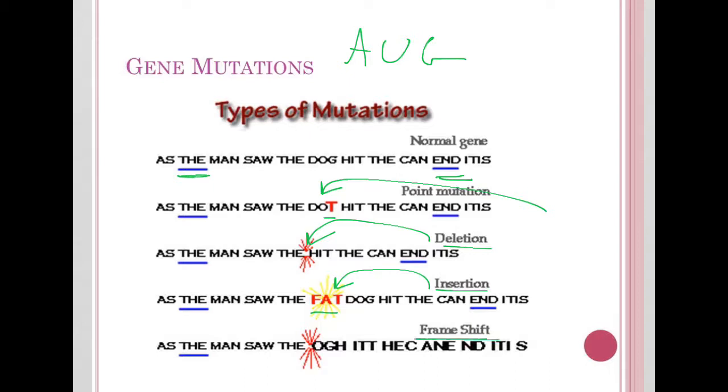But here's your frameshift mutation, where we deleted the D of dog. So now we have the man saw the O-G-H-I-T-T-E-H-E-C-A-N-E, etc. Notice that it's changed all of these amino acids, and we no longer have the correct stop codon anymore because that was also in our reading frame. So frameshift mutations can cause a lot of damage to the reading frame.